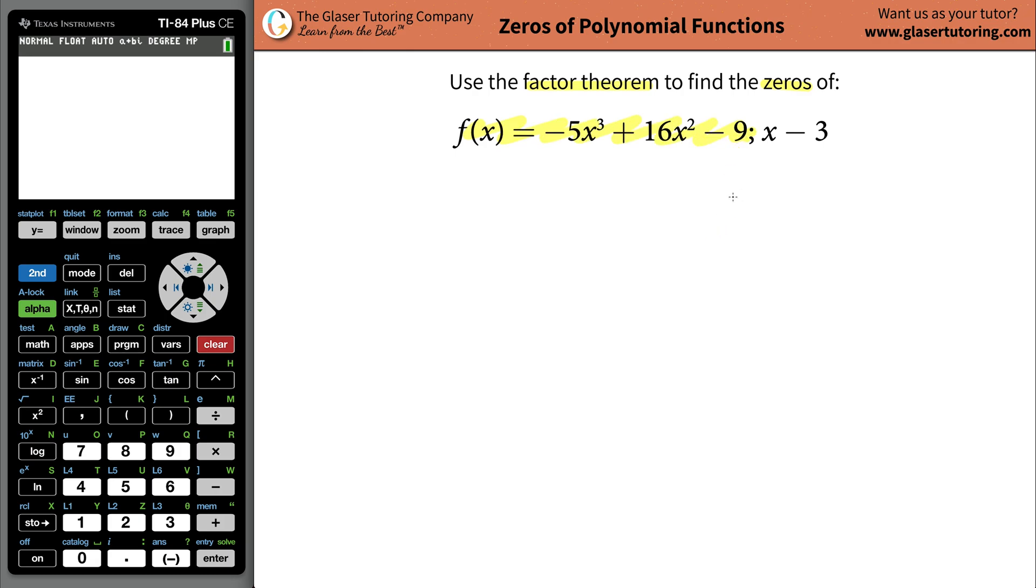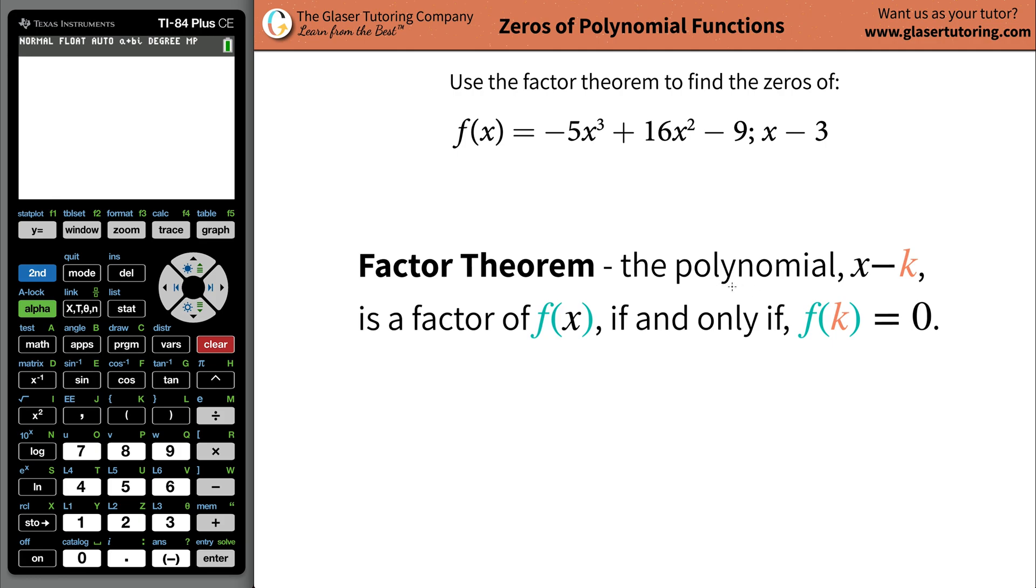So basically what we need to do first is we need to understand what the factor theorem is. So take a look. The factor theorem basically says that the polynomial x minus k, which is basically what we're trying to find is whether it's a factor, this linear function over here that they gave us, it's going to be a factor of some function f of x, which this is, if and only if the function's value evaluated at k is equal to zero.